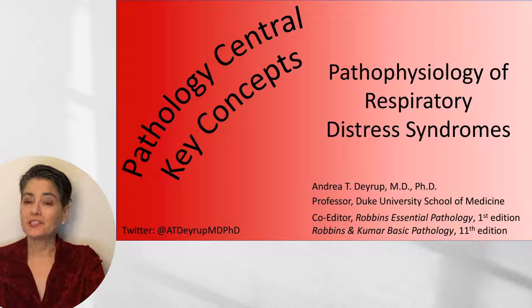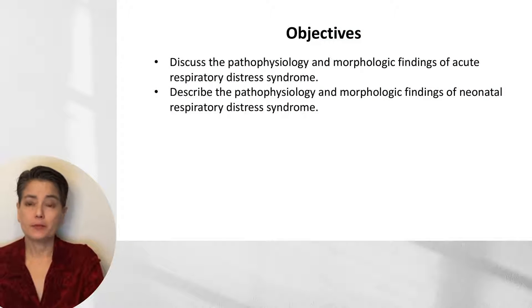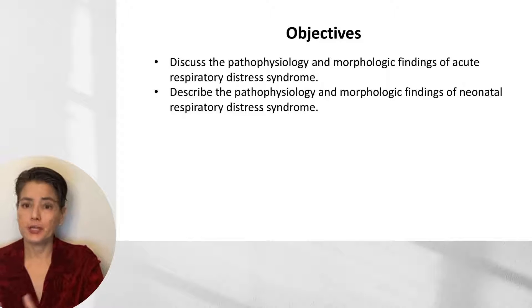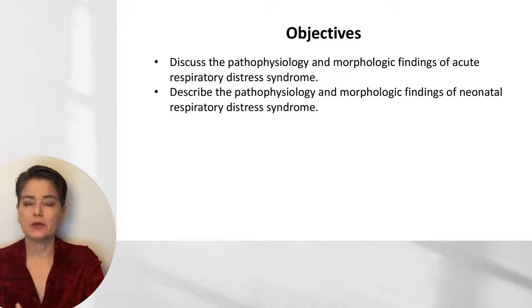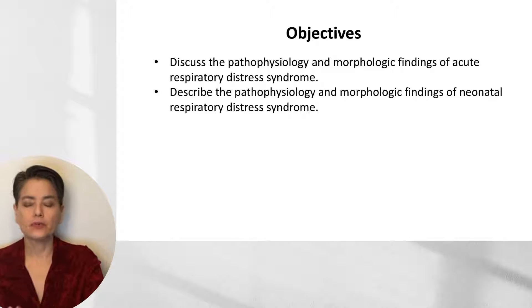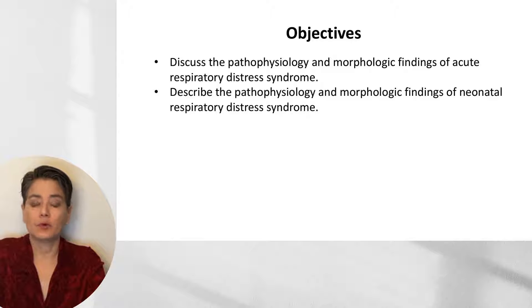Welcome to Pathology Central Key Concepts. The topic of this video is pathophysiology of respiratory distress syndromes. There are two entities I'll be addressing: acute respiratory distress syndrome, covered in the pulmonary chapter of Robbins pathology, and neonatal respiratory distress syndrome, covered in the pediatrics and genetics chapter. I'm combining these because they have similar pathophysiology and morphologic findings — a useful compare and contrast to understand both diseases.